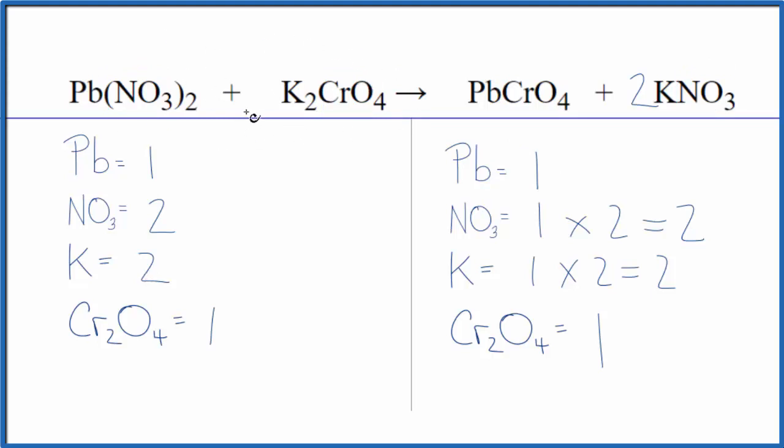Note that we have these two aqueous solutions here. When they react, this lead chromate is going to be a solid, so this will be a precipitate. It'll fall to the bottom of the test tube. This is Dr. B.